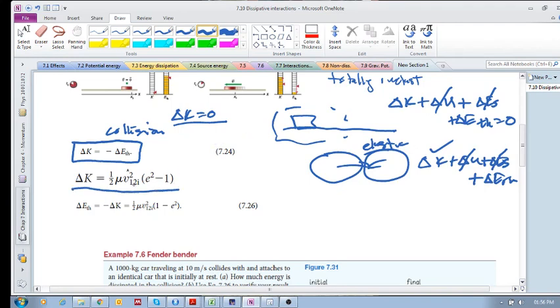But if it's an inelastic collision, then we can consider this equation which is from chapter 5. Remember that mu is your reduced inertia, v_12 is your initial relative velocity, and e is your coefficient of restitution. If we look at this equation, delta E_thermal is the negative delta K. This basically tells us in an inelastic collision how much kinetic energy is converted to thermal energy.